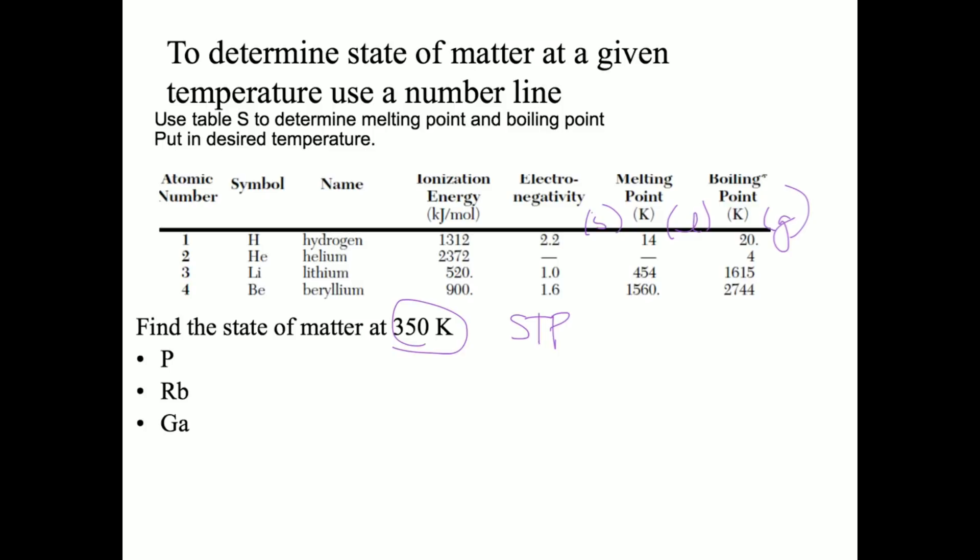Let's see if we can find the state of matter of hydrogen, element number one, at 350 degrees Kelvin. Here we can see that we have a melting point of 14 and a boiling point of 20. Since 350 is greater than both 14 and 20, then hydrogen will be a gas at 350 Kelvin. Now let's apply the same principle to lithium. Lithium has a melting point of 454 and a boiling point of 1615. The number 350 is less than 454, so lithium will be a solid at 350.